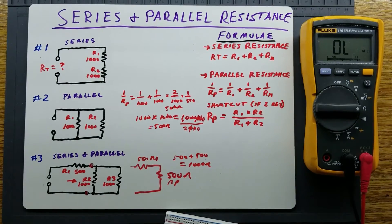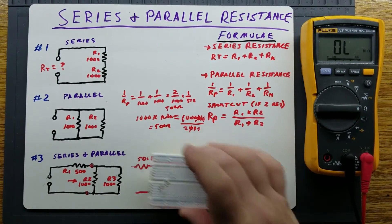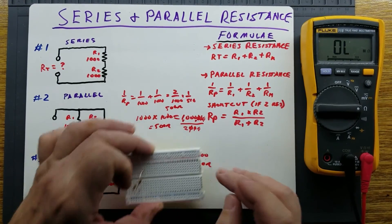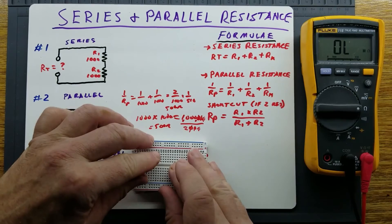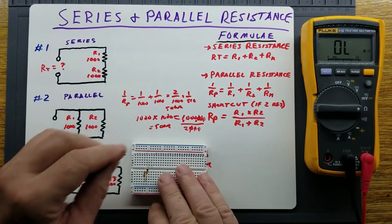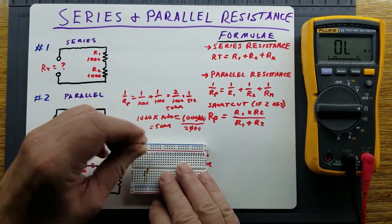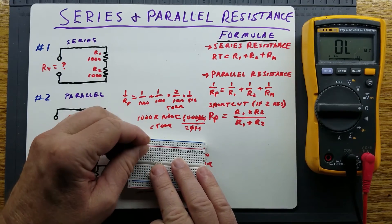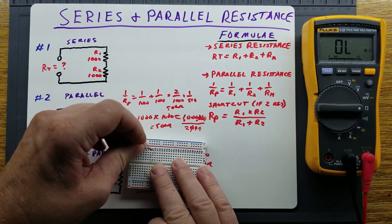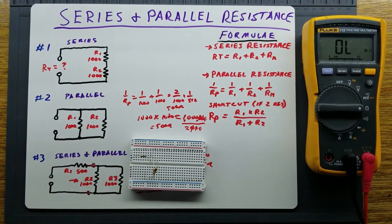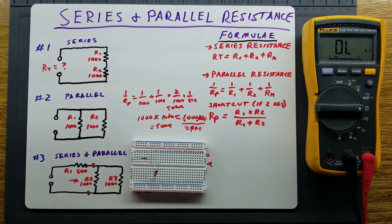So if we put this circuit together, we should get 1,000 ohms. We already have two 1,000-ohm resistors in parallel, and we're simply going to connect the 500-ohm resistor to the end of that and measure it — we should end up with about 1,000 ohms.